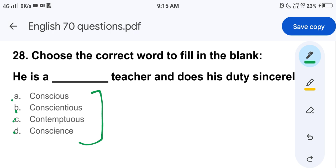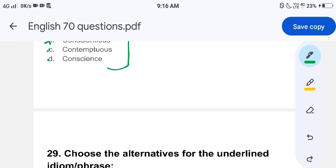So, these are very similar looking words, but if we look at their meanings, as we just saw, they are quite different. So what is the correct answer? It is B, conscientious. What was its meaning? Wishing to do one's work or duty well and thoroughly. He is a conscientious teacher and does his duty sincerely.